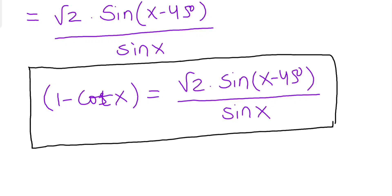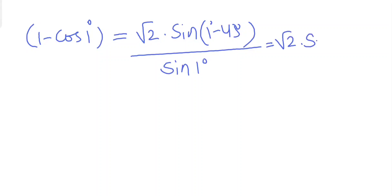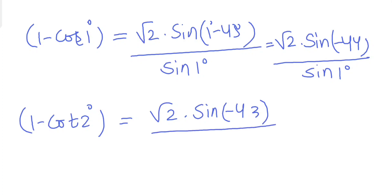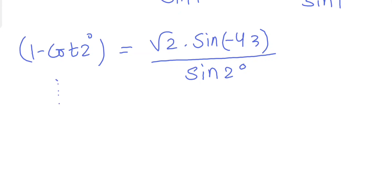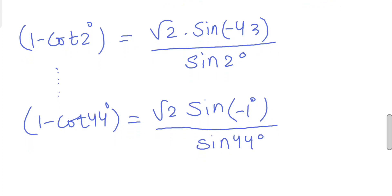So (1 - cot 1°) = √2·sin(1° - 45°) / sin 1° = √2·sin(-44°) / sin 1°. Similarly, (1 - cot 2°) = √2·sin(-43°) / sin 2°, and all the way up to (1 - cot 44°) = √2·sin(44° - 45°) / sin 44° = √2·sin(-1°) / sin 44°.